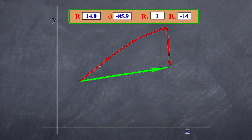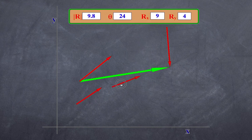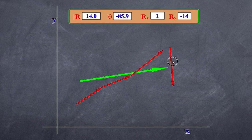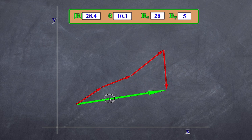The order at which you add these vectors is not important. You can see that the green line has not changed regardless of order. When vectors add up, the order is inconsequential. Mathematically, we say they are commutative — vector A plus vector B is the same as vector B plus vector A.